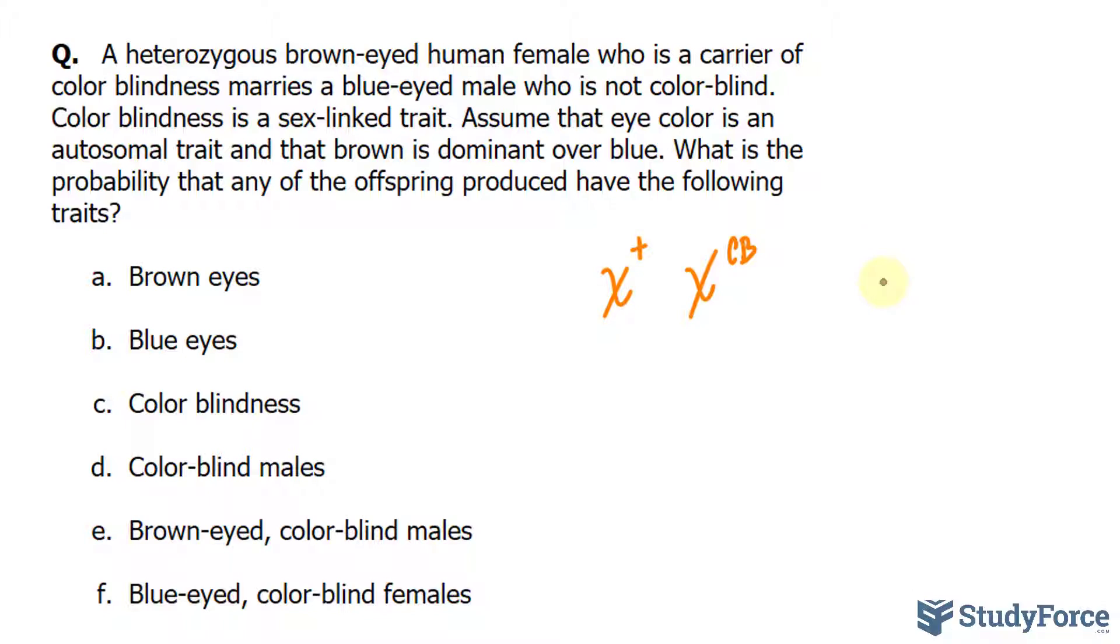Now we're also told that this female has brown eyes. Let's use the letter B to designate eye color, but you can use any letter that you like. So big B is dominant and little b is recessive. Remember that dominant is brown and recessive is blue.